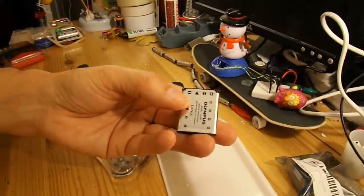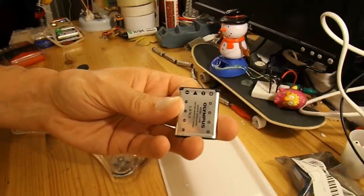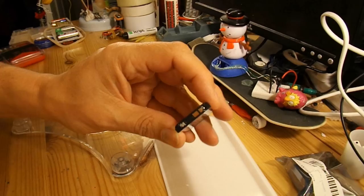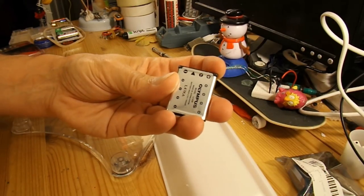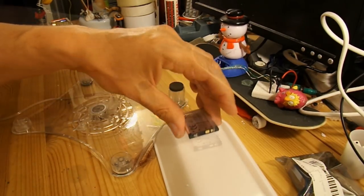That's my wife's battery out of her camera, a waterproof camera that I drowned on holiday. So that's 3.7v, and it's relatively light.